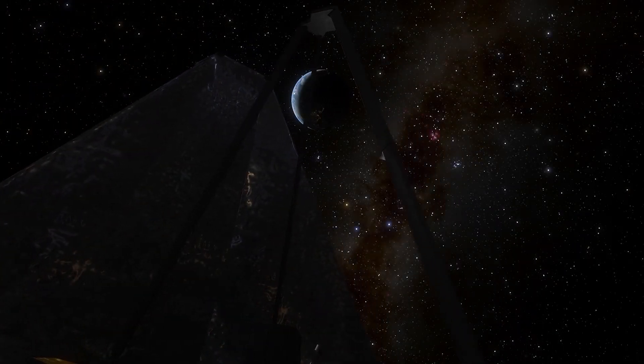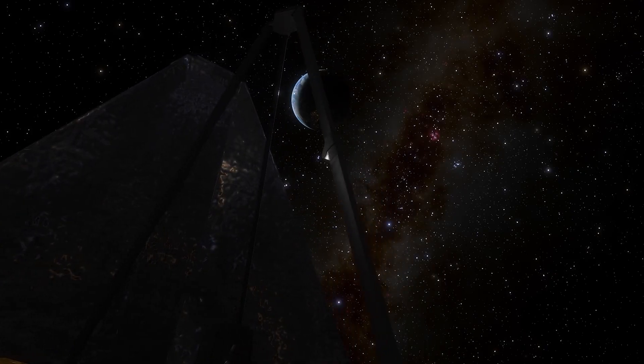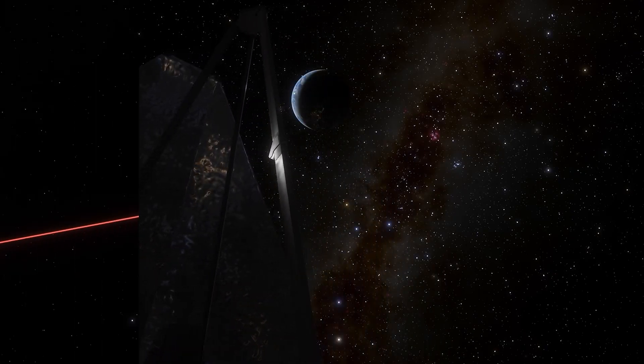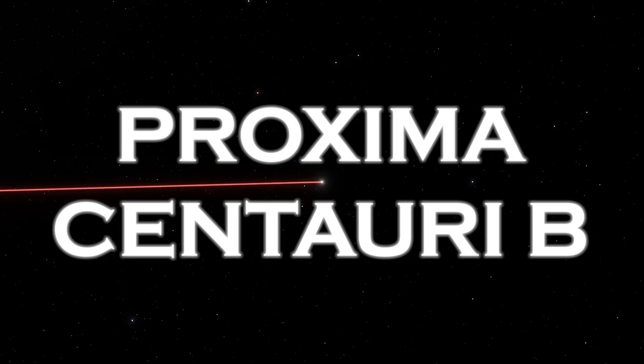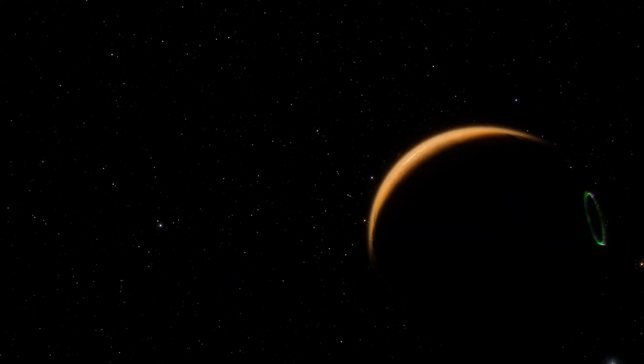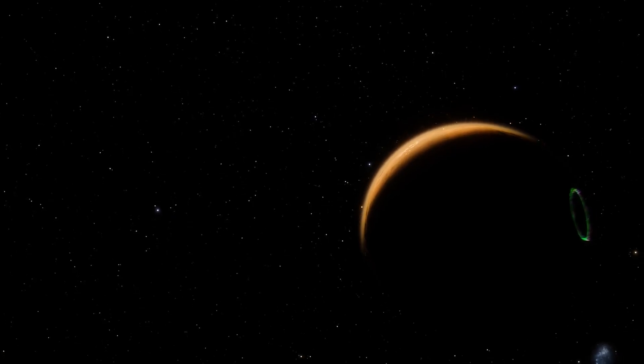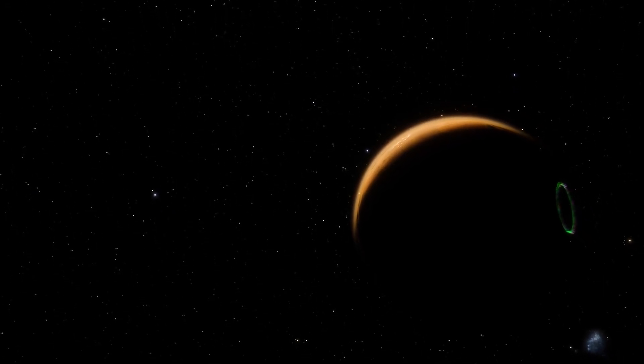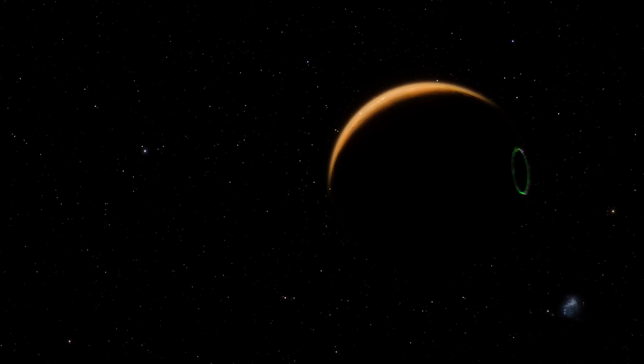While exploring the cosmos and transmitting critical data back to Earth, the telescope observed unique urban lights coming from the exoplanet Proxima Centauri b. These lights, as the name implies, appear to illuminate a distant city.